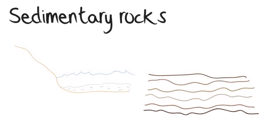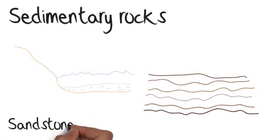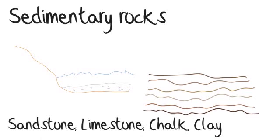They're characterized by a banded or layered pattern, and are usually made up of many different rocks and minerals. Examples of sedimentary rocks are sandstone, limestone, chalk, and clay.